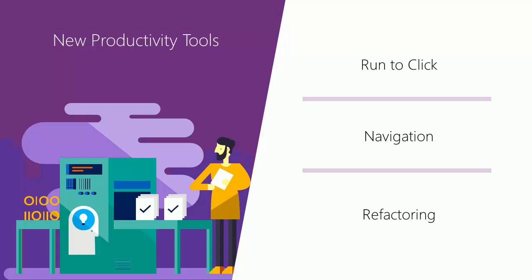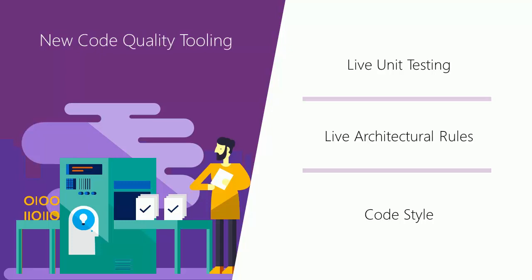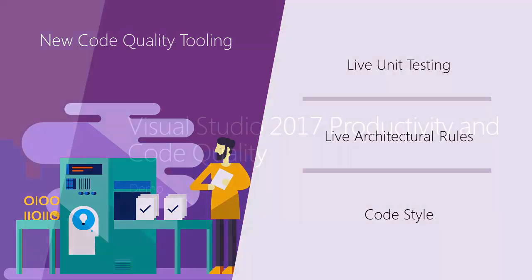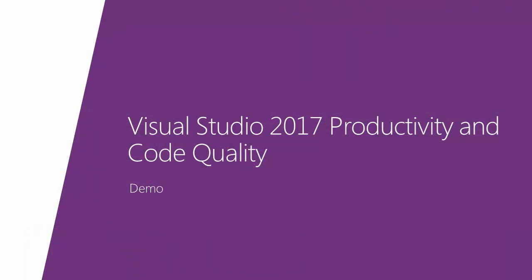I've got a couple of slides and then we'll do a demo showing some of these features. A broad key area is a whole skew of new productivity tools — improvements to navigation within the tooling, improved refactoring capabilities, and improvements to debugging including something new called 'run to click' that I'll show you in a minute. Another area is code quality — new features like live unit testing and live architectural rules.